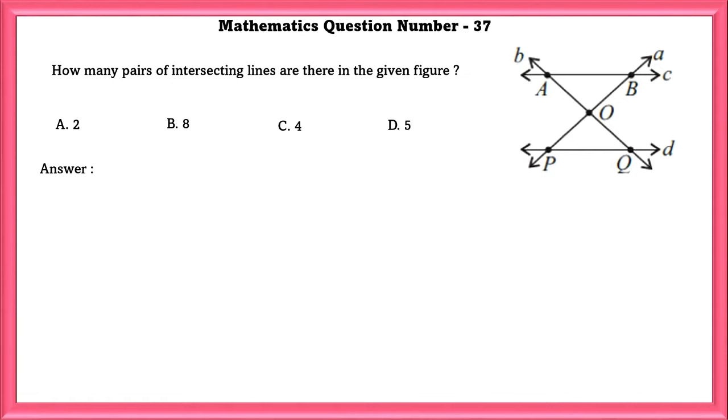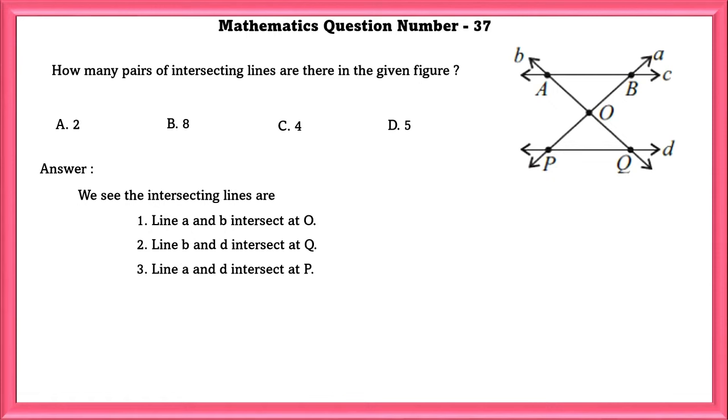Mathematics question number 37. How many pairs of intersecting lines are there in the given figure? Line A and B intersect at O. Line B and D intersect at Q. Line A and D intersect at P. Line A and C intersect at B. And line B and C intersect at A. There are five pairs of intersecting lines in the given figure.